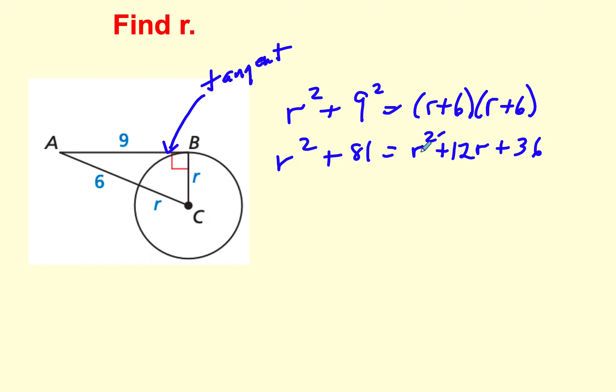I can subtract r squared on both sides, and then I can subtract 36 from both sides, and that will be 45 equals 12r. Then r will be equal to 45 divided by 12. 3 goes into that one 15 times, and 3 goes into that one 4 times. So there's our radius, 15 over 4, or you can make it a decimal if you wish.